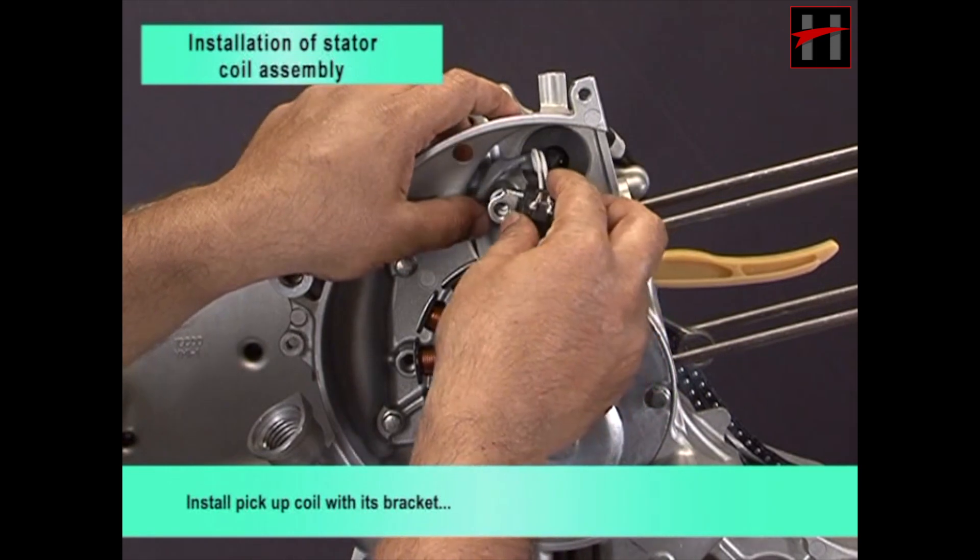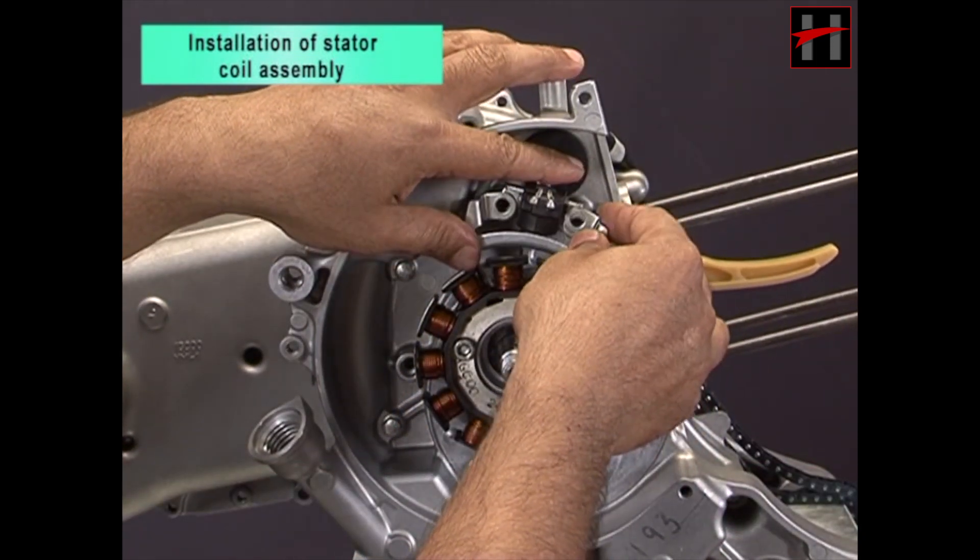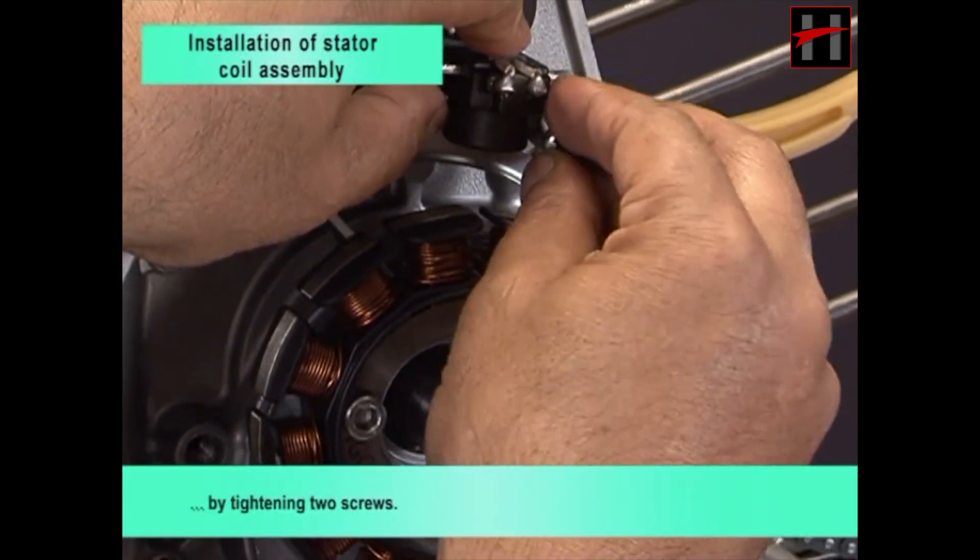Install pickup coil with its bracket by tightening 2 screws.